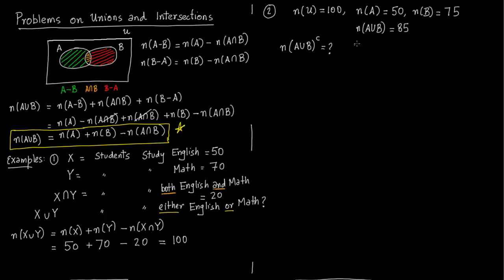A union B complement is the universal set minus A union B — that is the definition of the complement. So the number of elements in A union B complement equals number of elements in the universal set minus number of elements in A union B. That is 100 minus 85, which gives us 15.